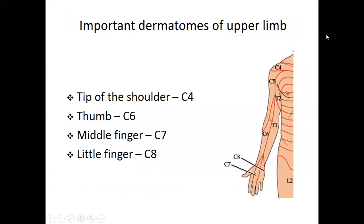The important dermatomes of the upper limb are: the tip of the shoulder is C4; the thumb is C6, supplied by the C6 spinal segment; the middle finger is C7. These are the key dermatomes of the upper limb to remember.